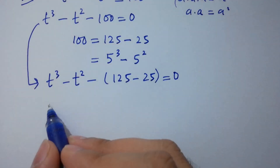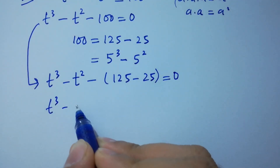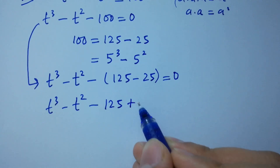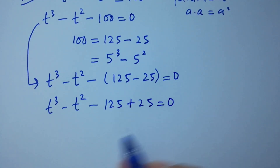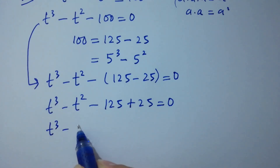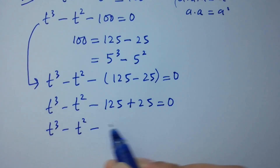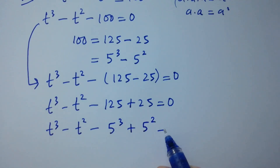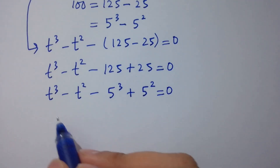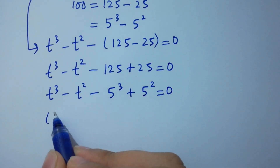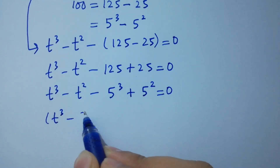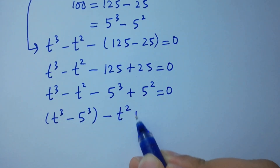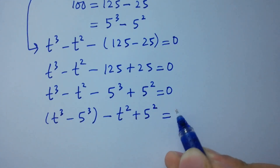Simplifying: t cubed minus t squared minus 125 plus 25 equals 0, which gives us t cubed minus 5 cubed minus t squared plus 5 squared equals 0.